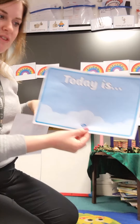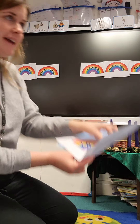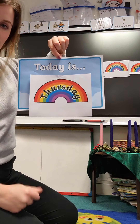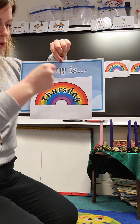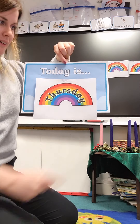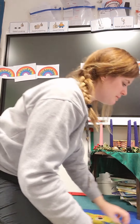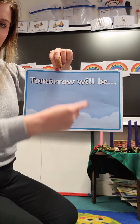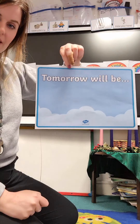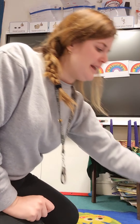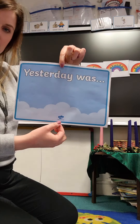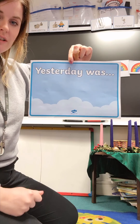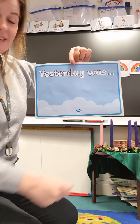At home you can have this up and each day it changes. You can put the day of the week flashcard onto your 'Today is' piece of paper. You might also want to make one for 'Tomorrow will be,' and again you put whichever day of the week it will be tomorrow on there. And make another piece of paper that says 'Yesterday was,' and again you put whatever flashcard it was yesterday.